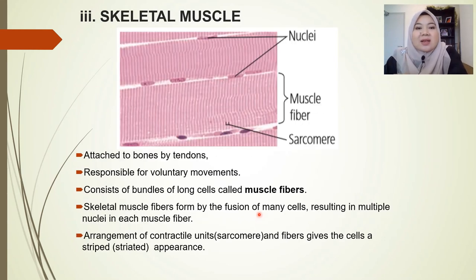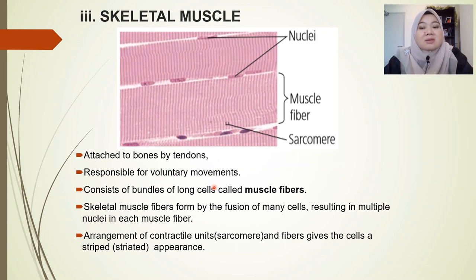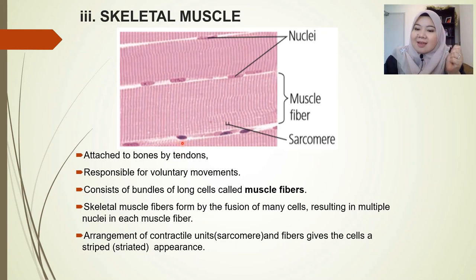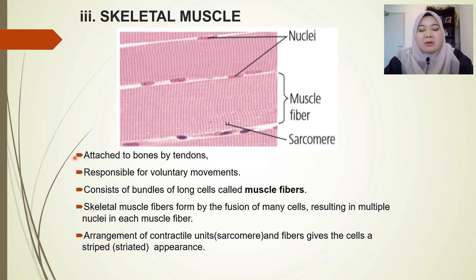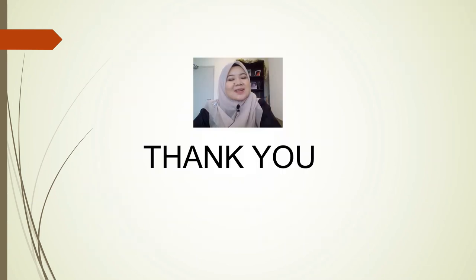The last one is skeletal muscle. Skeletal muscle is attached to bones by tendons and is responsible for voluntary movement — activities we do with conscious control, like moving your hands or fingers. Skeletal muscle consists of bundles of long cells called muscle fibers. Skeletal muscle fibers are formed by the fusion of many cells, resulting in multiple nuclei in each fiber. The arrangement of contractile units called sarcomeres gives the cells a striped or striated appearance. That's all for the specialized tissues in animals.